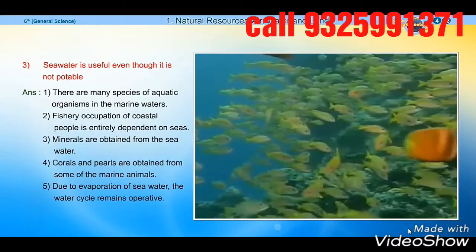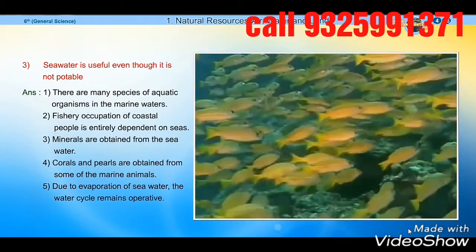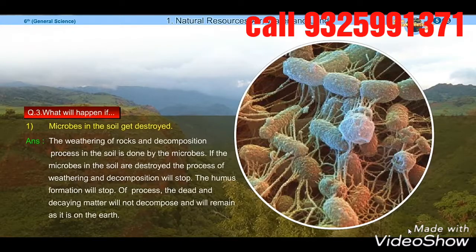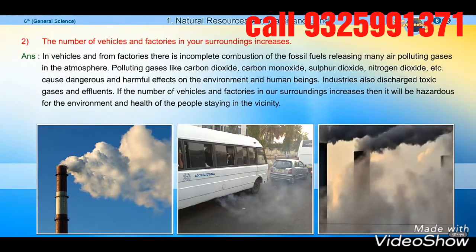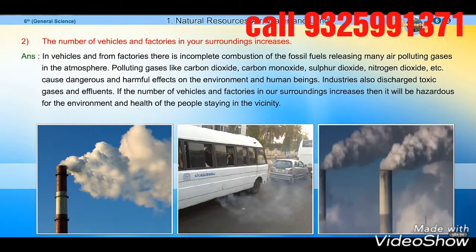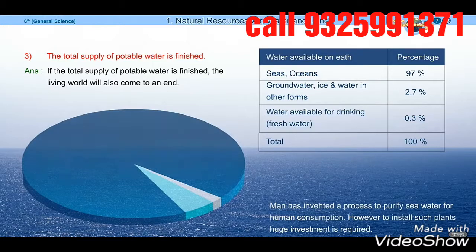Water is life. Living organisms cannot survive without water. The blood of animals and sap of plants also have a high percentage of water, hence water is said to be the life of all living things. Sea water is useful even though it is not potable. There are many species of aquatic organisms in marine waters. The fishery occupation of coastal people is entirely dependent on the sea, and minerals are obtained from sea water. What will happen if microbes in the soil get destroyed?